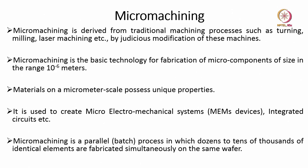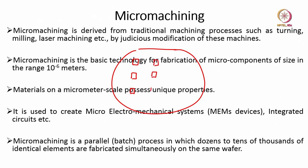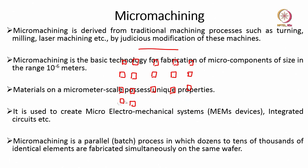Micromachining is a parallel process in which tens of thousands of identical elements are fabricated simultaneously on the same wafer. For example, you can etch many transistors or devices from a single wafer in one go, which is why we call it a batch manufacturing process. Since you can create many devices from a single wafer, it is a batch process.